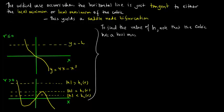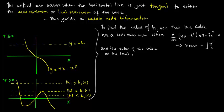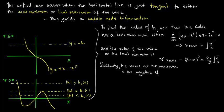To find the value of h, note that the cubic has a local maximum when d/dx of rx minus x cubed, which is r minus 3x squared, equals 0. So x_max equals the square root of r by 3, and the value of the cubic at the local minimum is r times x_max minus x_max cubed, which equals 2r by 3 times the square root of r by 3.